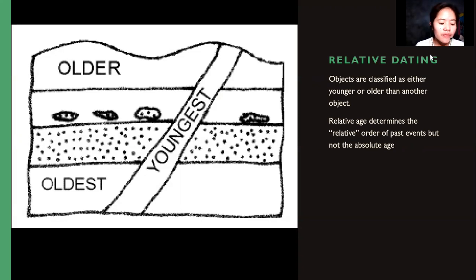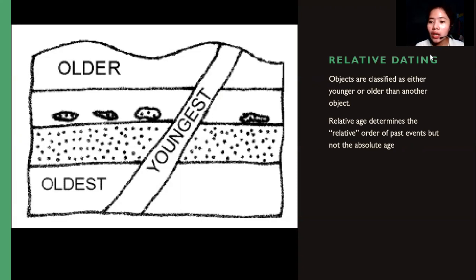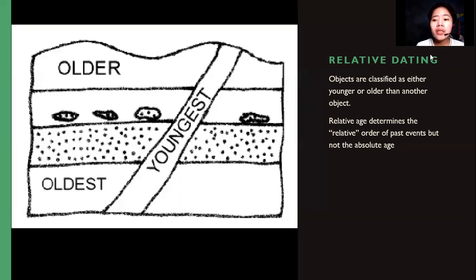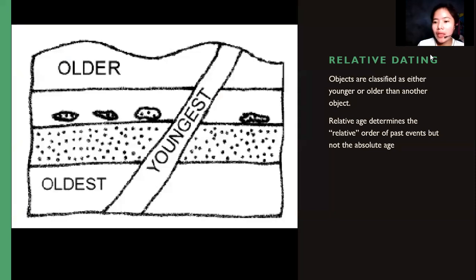We already discussed strata — they are layers with internally consistent characteristics, making it easier to distinguish one stratum from another type of layer or stratum, and thus determine their relative age.